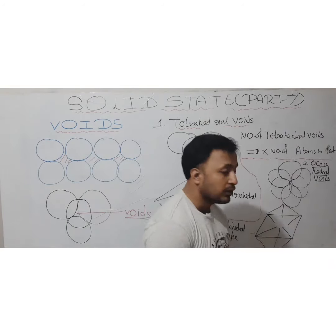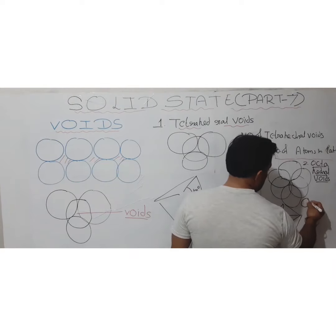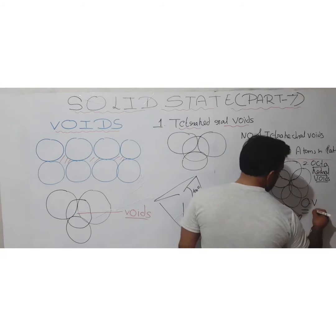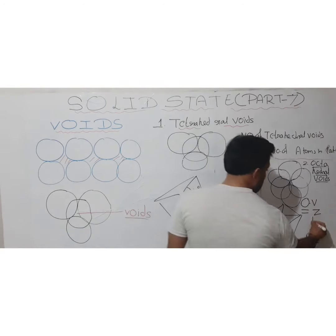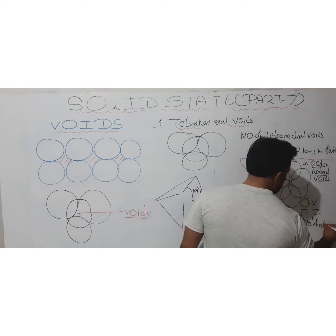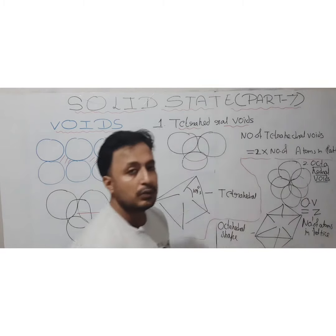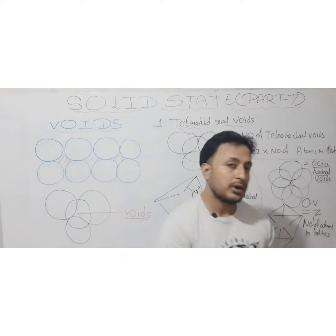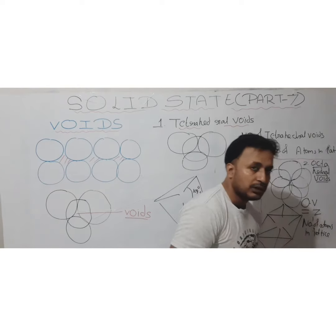How many octahedral voids are there in different kinds of crystals? Using the short form OV for octahedral voids, octahedral voids are exactly equivalent to Z — the number of atoms in the unit cell. In a simple cubic lattice there is 1 octahedral void, in FCC there are 4, and in BCC there are 2.